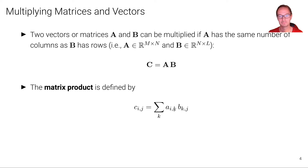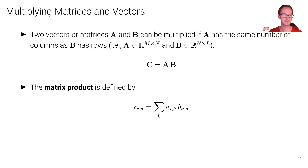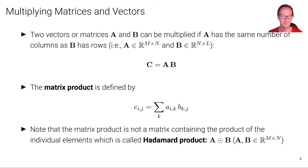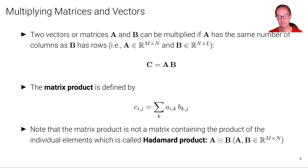So we take the elements of the i-th row of matrix A and the elements of the j-th column of matrix B — these are vectors — and we multiply all corresponding elements and sum them up. Note that the matrix product is not a matrix containing the product of individual elements, which is called the Hadamard product. This is different from addition where we added matrices element-wise. The Hadamard product, which is also sometimes useful and denoted as such, requires that matrices A and B have exactly the same shape.